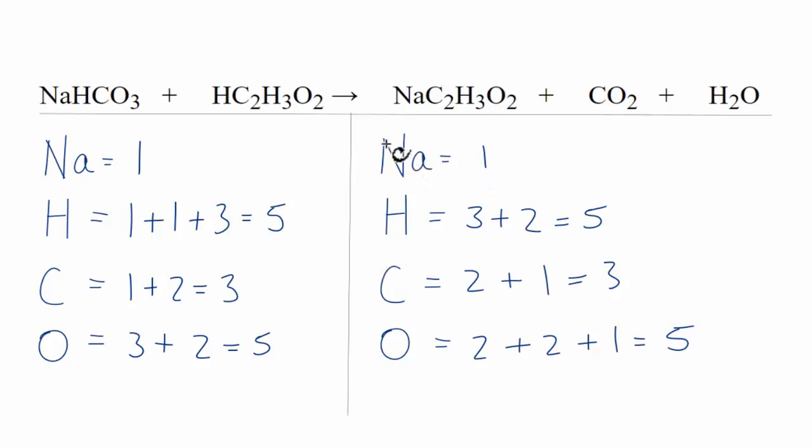Where people usually have trouble balancing this equation is that they don't count up the number of hydrogen atoms correctly, or the number of carbon, or the oxygens on either side of the equation. They'll see the hydrogen here, add this one, maybe they'll skip over this hydrogen and then add these, or maybe they won't add them at all. So you have to make sure you count all of the atoms up on both sides of the equation.